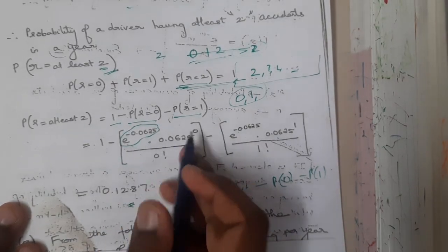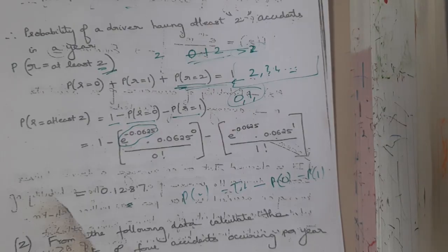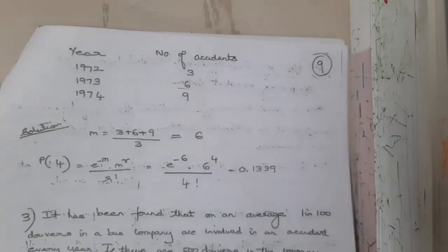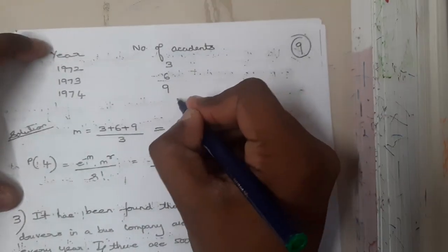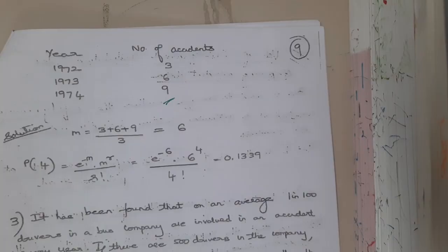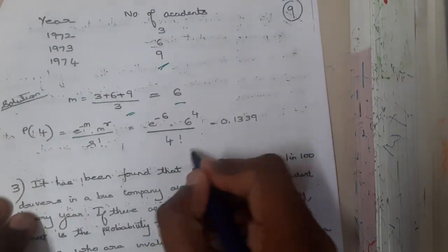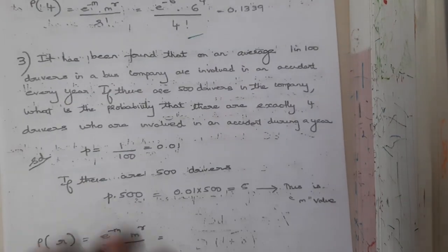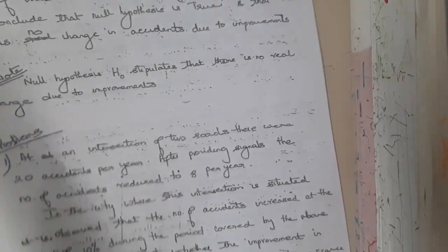Please use a calculator since we cannot remember e-power values. This is one problem; there are a few more to solve. In some situations the average is not directly given and must be calculated first. I hope everyone got a clear idea on this method.